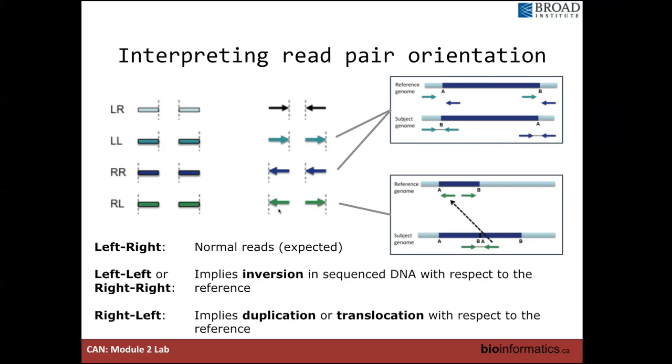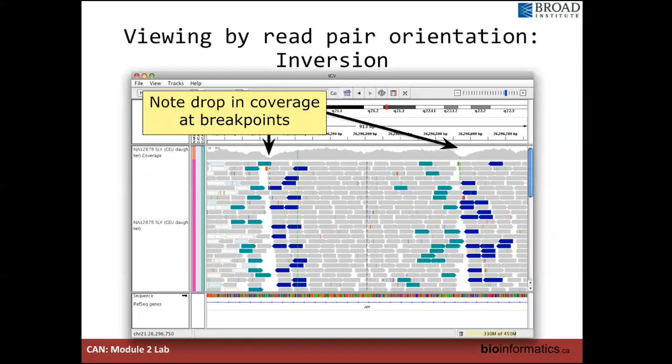And if you have reads kind of facing the opposite way, if they're going right-left, this might be indicative of a tandem duplication, as depicted here or as a translocation within the same chromosome. So in this example, this is an inversion. We've colored the reads by read pair orientation. And so we can see there are a bunch of reads in incorrect orientations, but their mates as well. You can look at the coverage track and see that there is a drop in coverage around the same position. So you can use multiple tracks to kind of confirm or validate what might be going on in a particular sample.